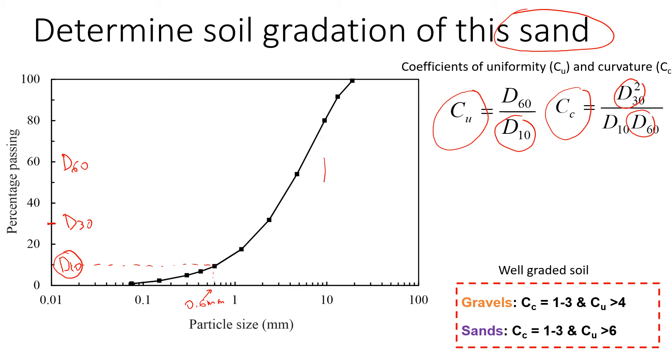Now we do the same for D30. For D30, we're going to have something about 2.1 millimeters. So I'll write down here that D30 is equal to 2.1.